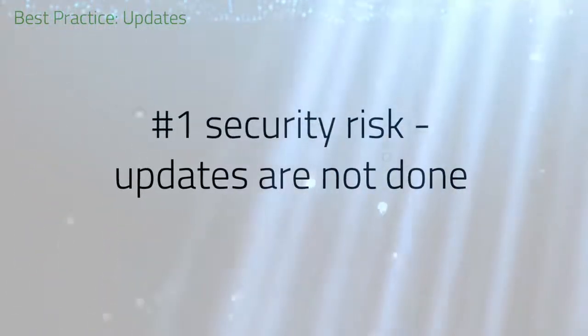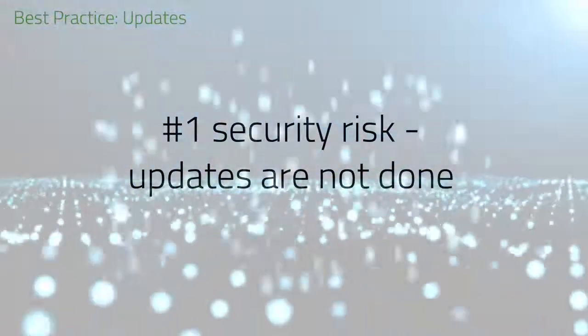Our second best practice tip centers around updates. The number one security risk to any big data system is that updates have not been done and old systems are running with publicly known security threats. IT system updates are the most important security measure. No IT system is 100% secure — each software has thousands or millions of lines of code, and hence there are errors in it. From time to time, errors get detected, get published, and then any attacker could exploit them.